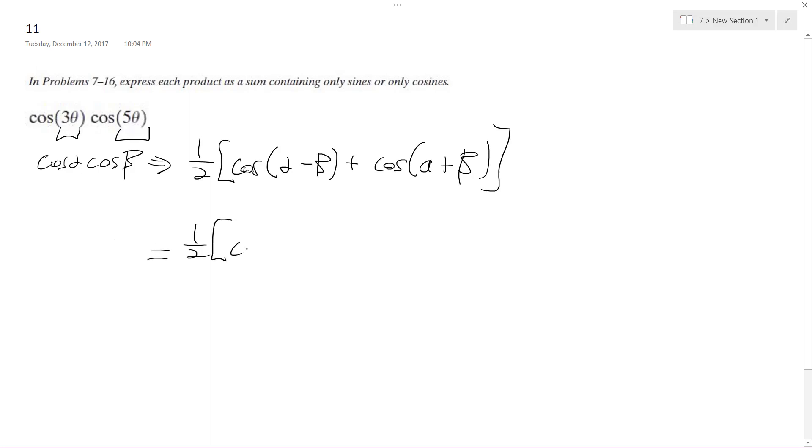So we end up with one-half of cosine of 3 theta minus 5 theta, plus cosine of 3 theta plus 5 theta. Still simplifying this down, this is one-half, cosine of 3 theta minus 5 theta is negative 2 theta, plus cosine of 8 theta.